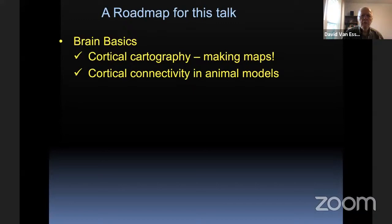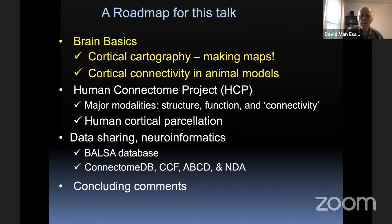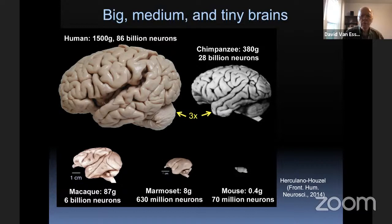We're going to start with some basics about cortical cartography — how we make maps, past and present — how we look at cortical connectivity in animal models. The second big chunk will be on the Human Connectome Project, and then I'll talk about data sharing and neuroinformatics aspects before we wrap it up and have time for questions.